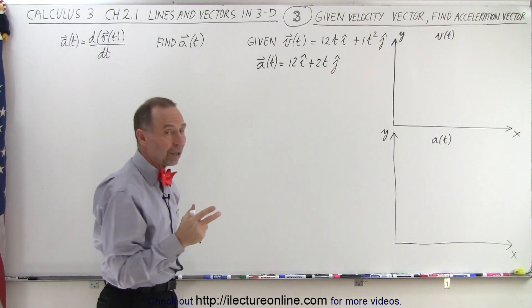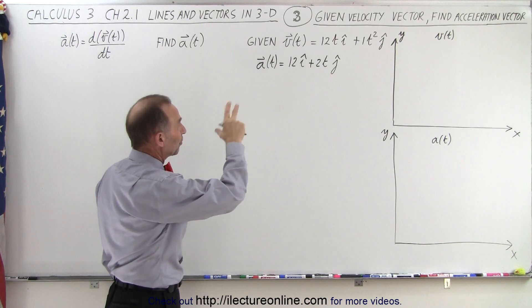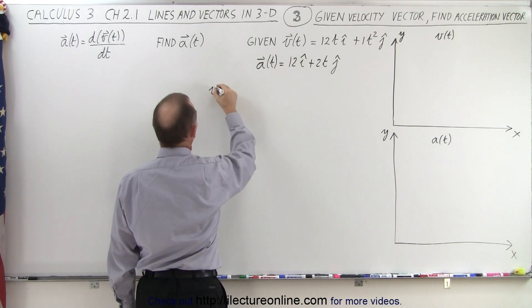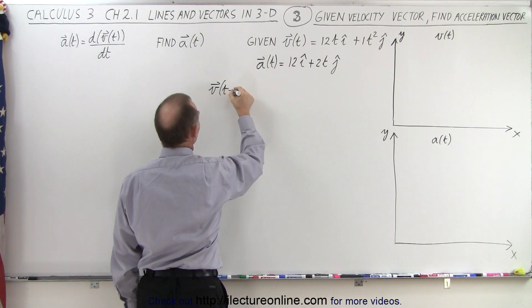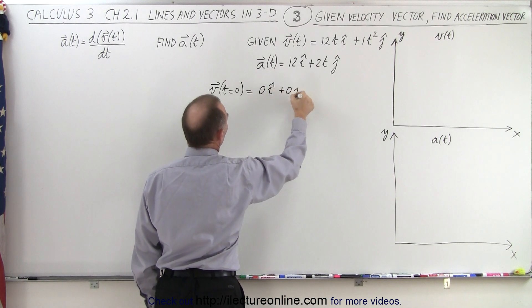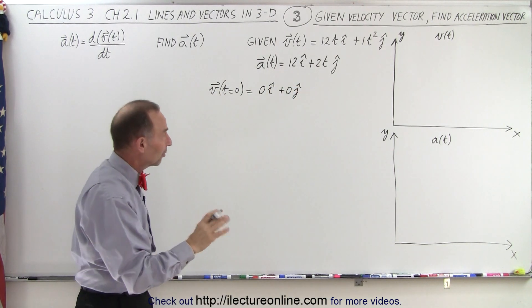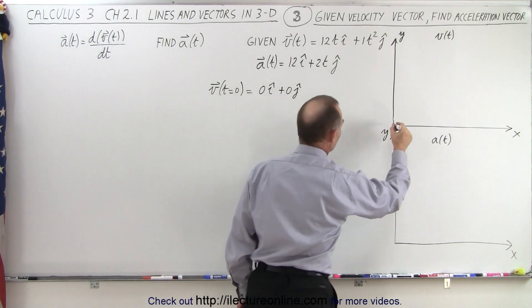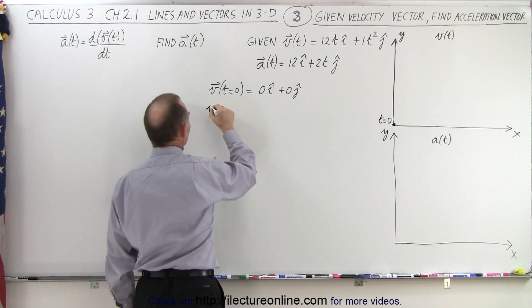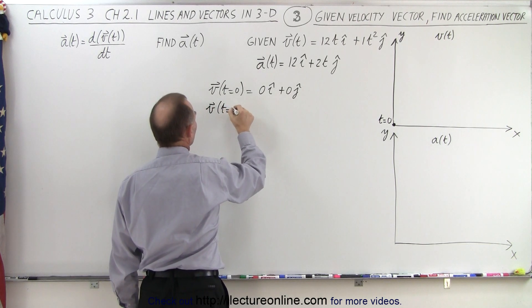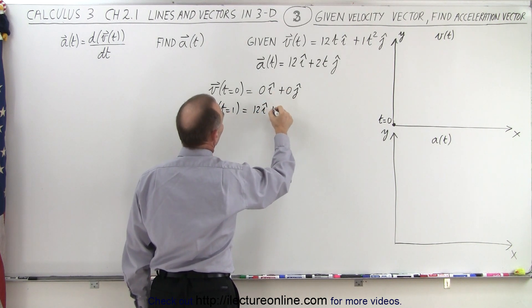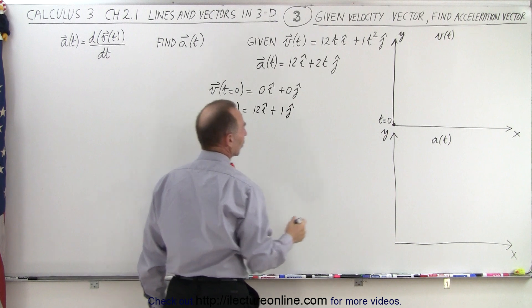We're going to evaluate the velocity vector with respect to various values for time and do the same for the acceleration vector. First, the velocity vector when t is equal to zero gives us 0i plus 0j, which means at t equals zero the object is not moving. Then for t equal to one, that gives us 12 in the i direction plus 1 in the j direction.